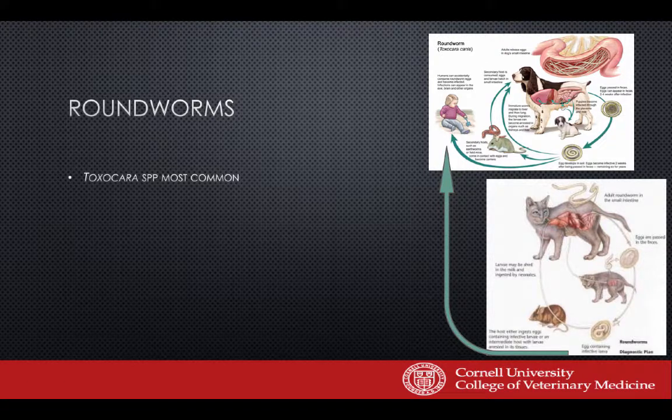Roundworms — Toxocara species are the most common. Adults live in the small intestine and produce long-lived eggs passed in feces. The eggs are not immediately infective; they require at least two weeks in the environment to become infectious. By then the feces has usually fallen apart and eggs are incorporated into soil. So when people say 'fecal-oral,' the answer is 'yes, but' — it has to be old poop, not fresh feces.